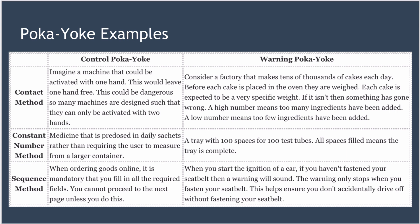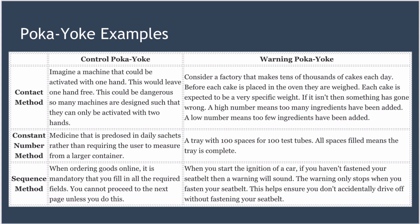Next, the constant number method for a warning Poka-Yoke. Imagine a tray with 100 spaces which fit 100 test tubes. If all the spaces in the tray are filled, it's very easy to see that the tray is complete.